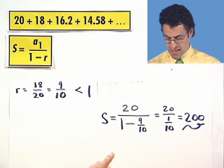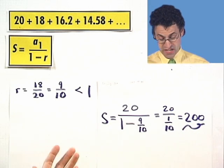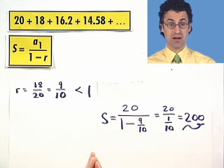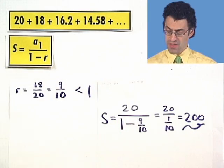So in fact, we realize now that all of these infinitely many numbers can be added together and the total sum is 200. Let's try another example.